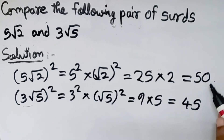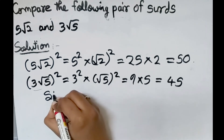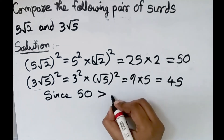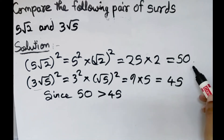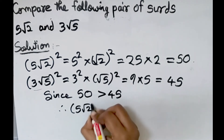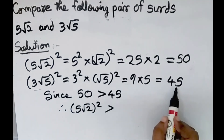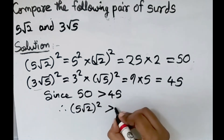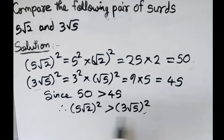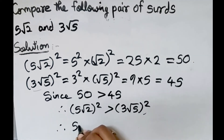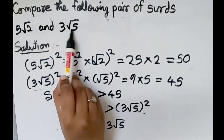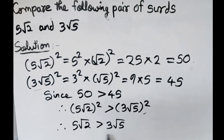Here 50 is greater than 45. Since 50 is (5 root 2) squared and 45 is (3 root 5) squared, therefore (5 root 2) squared is greater than (3 root 5) squared. Both sides have squares, so we can cancel them. Therefore 5 root 2 is greater than 3 root 5. This is the final answer.